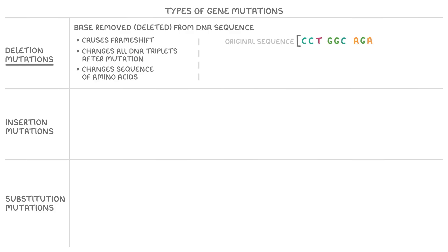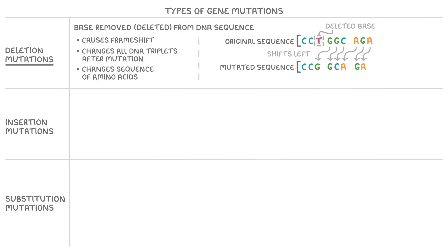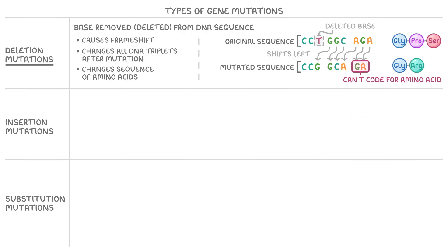For instance, if this is our original sequence and a mutation deleted this thymine, we'd then be left with this mutated sequence where every base after the deletion shifts to the left. Because we read the genetic code in groups of three bases, all DNA triplets after the deletion have changed. So while the original sequence coded for the amino acids glycine, proline, and serine, the new sequence codes for glycine and arginine — and because we're missing one base, the final two bases can't code for an amino acid at all.